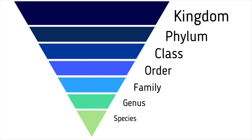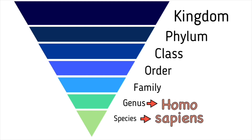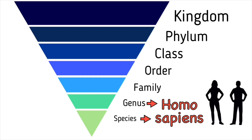Scientific names of organisms, usually in Latin or Greek, are the combination of the genus and species names. For example, Homo sapiens, commonly known as humans.